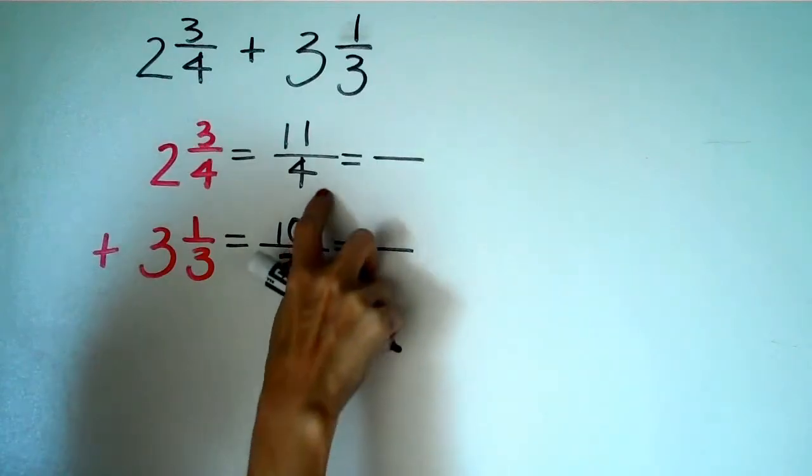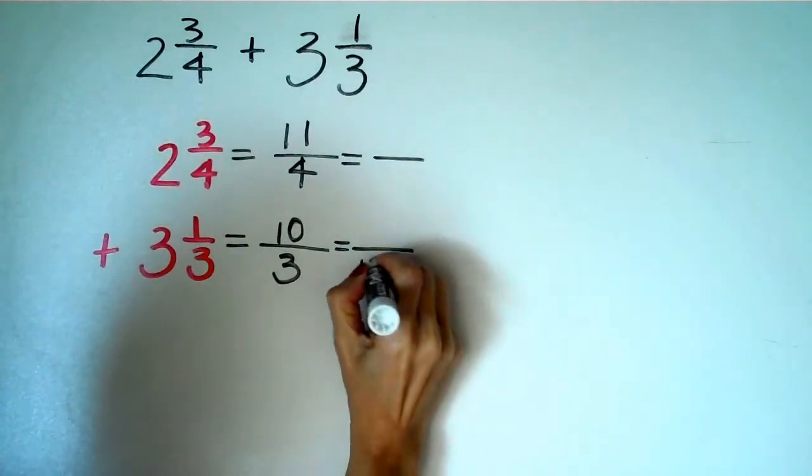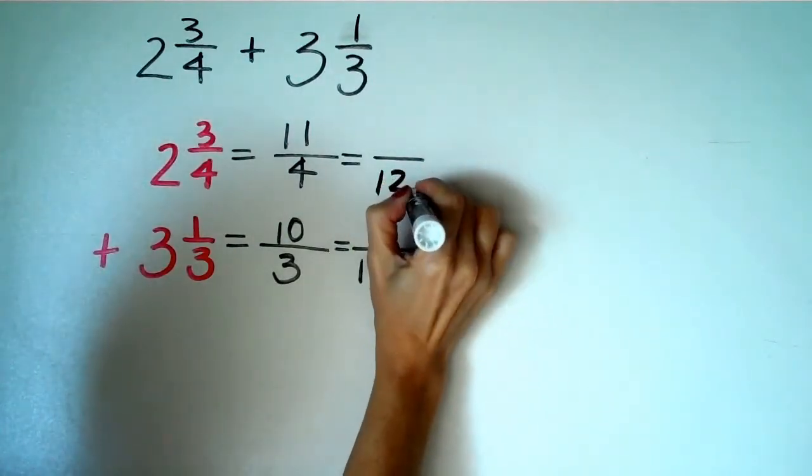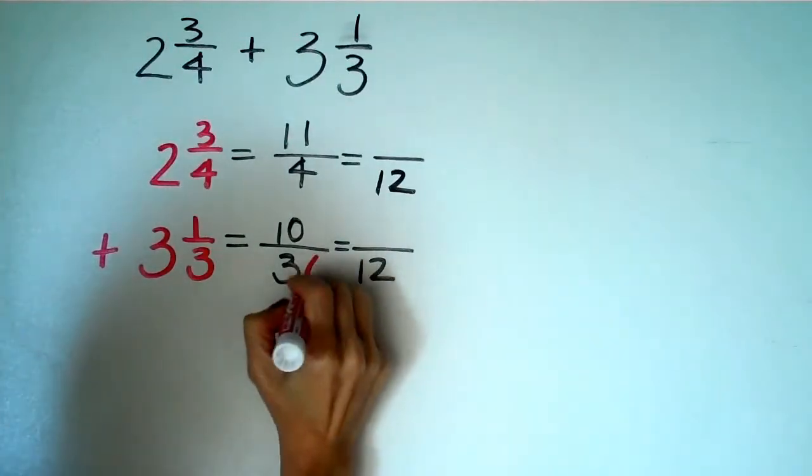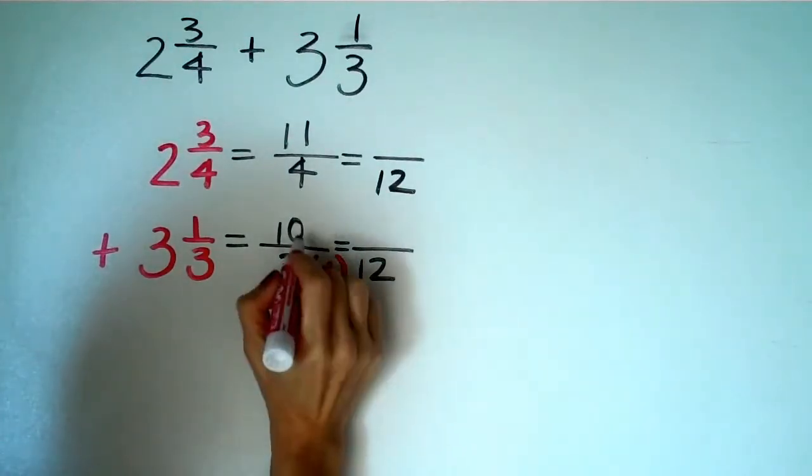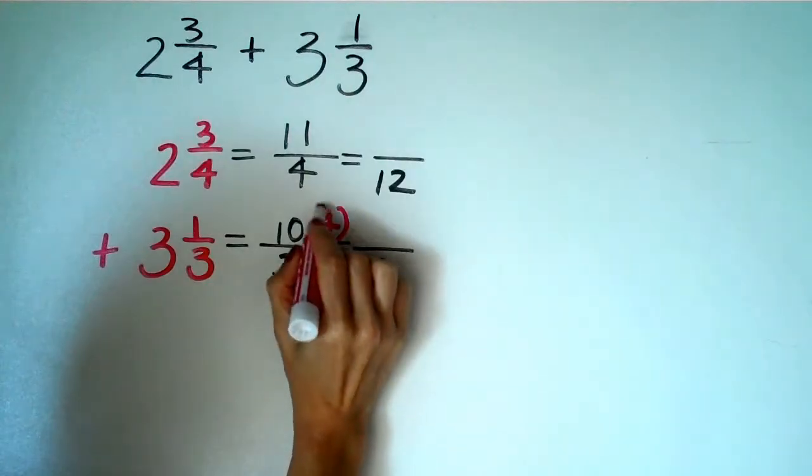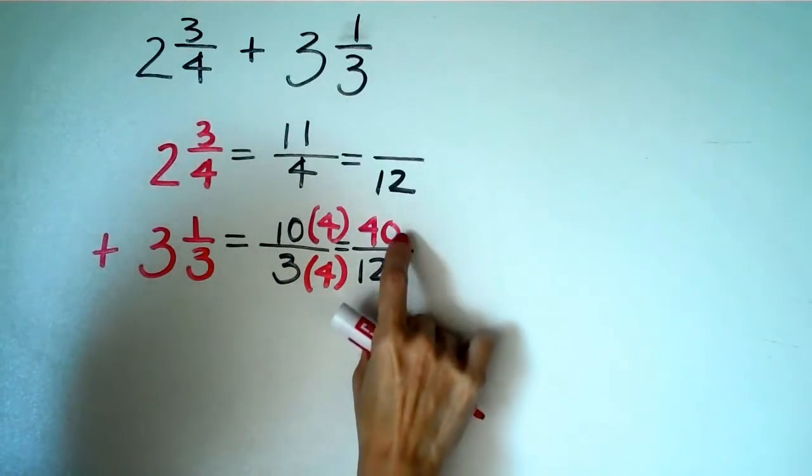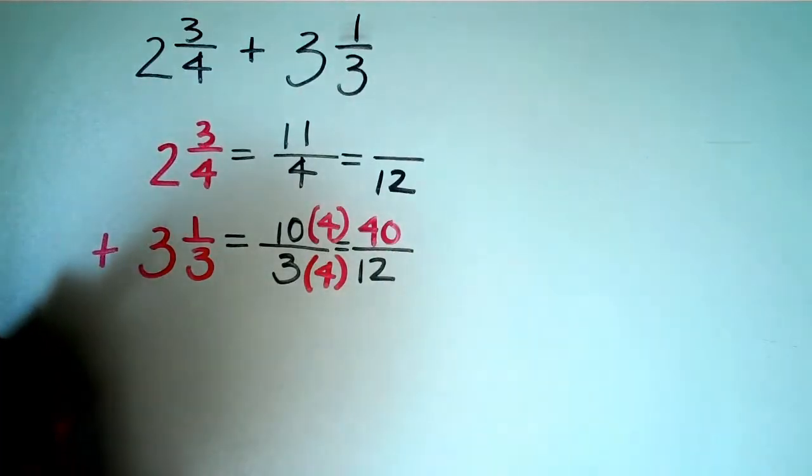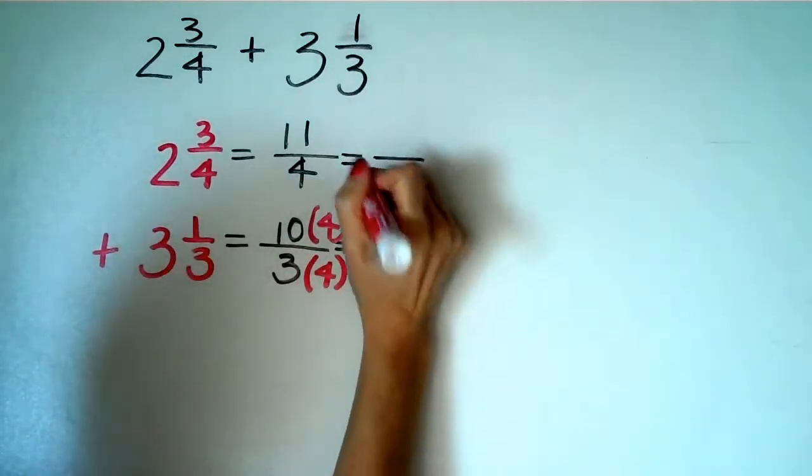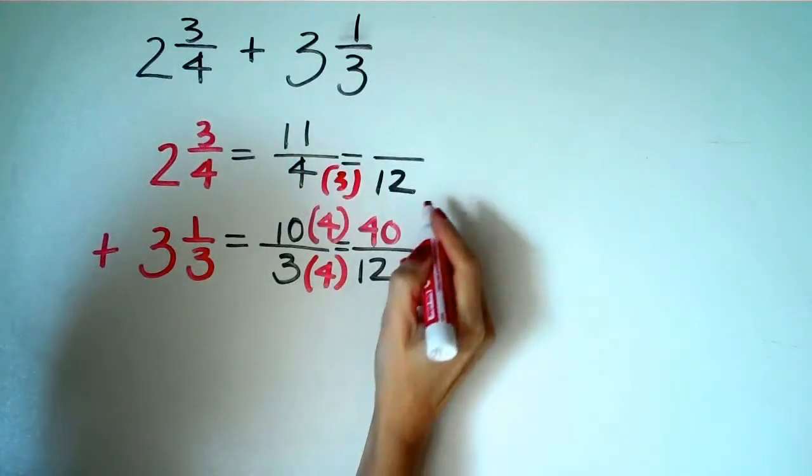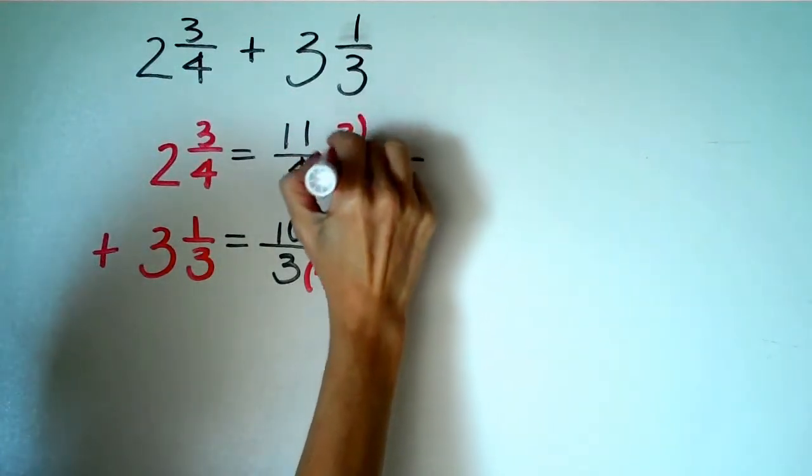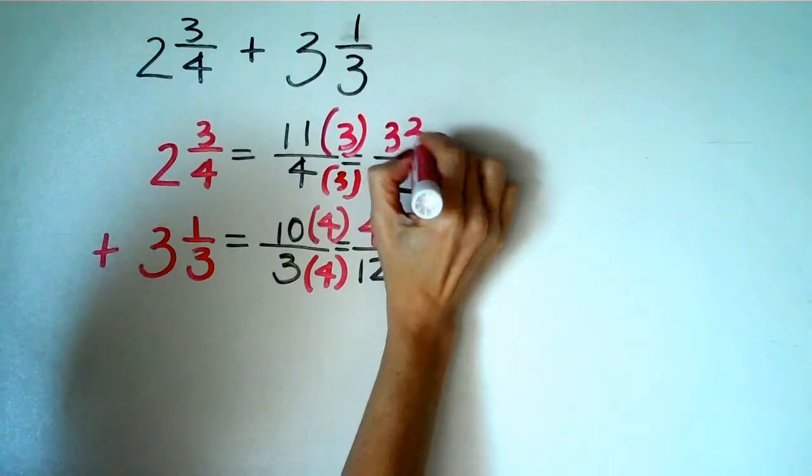So three fits into twelve, four fits into twelve. I definitely can use twelve as my common denominator. I know three times four is twelve and ten times four is forty. So ten over three is equivalent to forty over twelve.